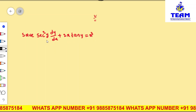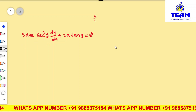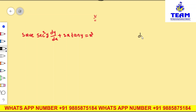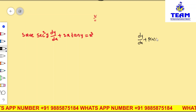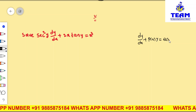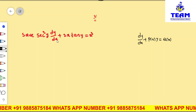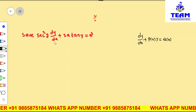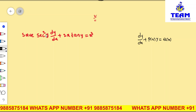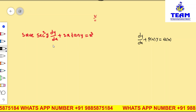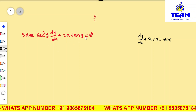We know the first order, first degree standard linear differential equation is of the form dy/dx + P(x)·y = Q(x), where the right side Q(x) is a function of x only, and the coefficient of dy/dx should be 1.